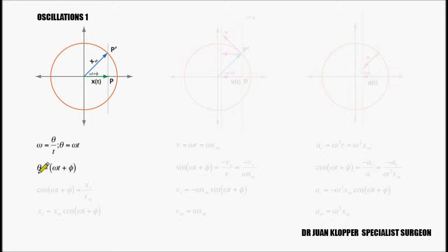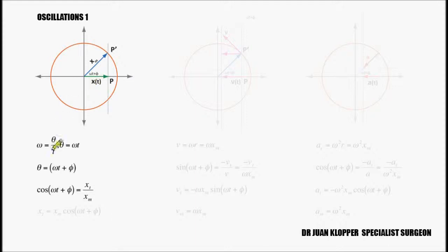So your theta angle at some time t is going to be the angular velocity times time, plus your initial angle — and that's called the phase angle or the phase shift of simple harmonic motion. Now if I deconstruct xm, the radius, you'll see that the x component is then going to be our displacement at time t. Using basic trigonometry, if we take the cosine of that angle — which we've now called omega t plus phi — it's simply going to be x(t) over xm. And there we have our first displacement equation for simple harmonic motion.